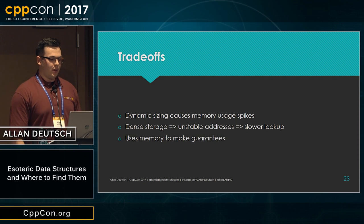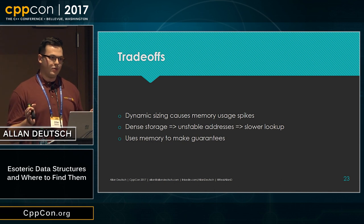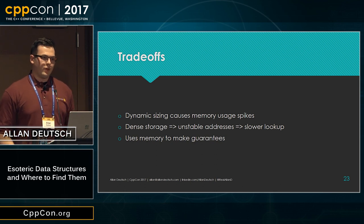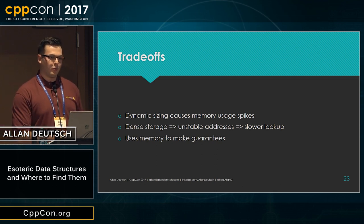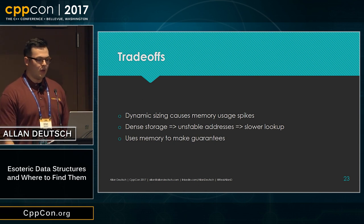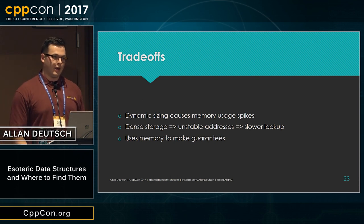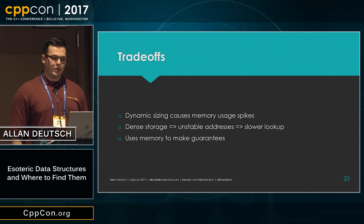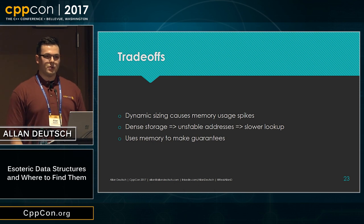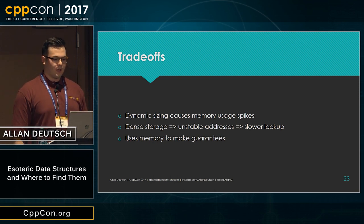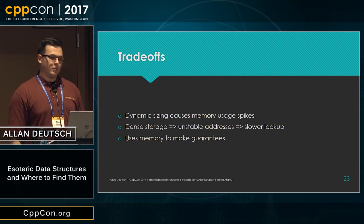Some of the trade-offs of a slot map are that dynamic sizing can cause memory usage spikes. Especially in games, when you have space for a thousand elements and want to grow, typically that's going to be a 1.5x or 2x growth, so you not only need the memory from before but also the new memory — which is a big jump. Whereas something like a node-based hash map, you can allocate just the node you need. Also, due to the dense storage, the addresses of the elements are unstable, so lookups are a bit slower than just using a raw pointer.